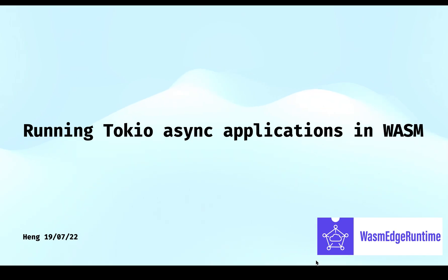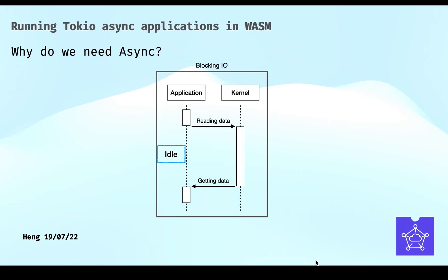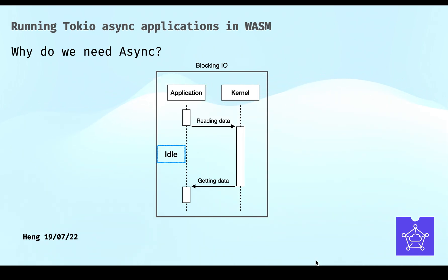The topic of this talk is Running Tokio Applications in WebAssembly. First, I want to introduce why we need async. For blocking I/O, we have to wait for the I/O operation to complete before we can perform subsequent computations. If our task is I/O bound, we'll spend a lot of time just waiting, such as waiting for a response from the server.